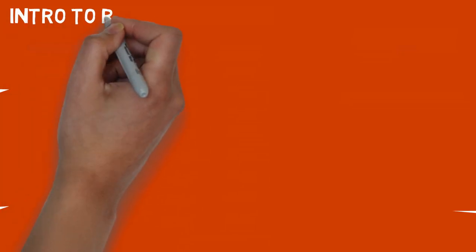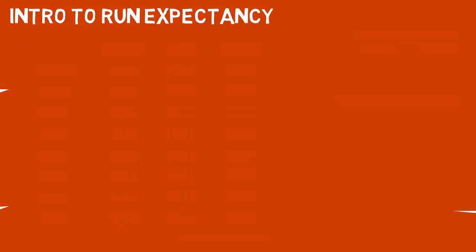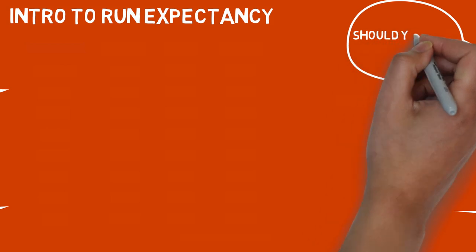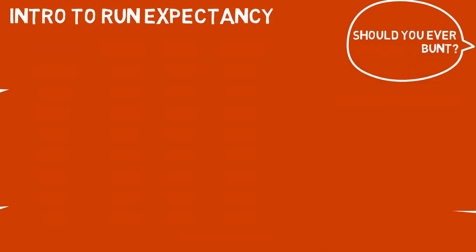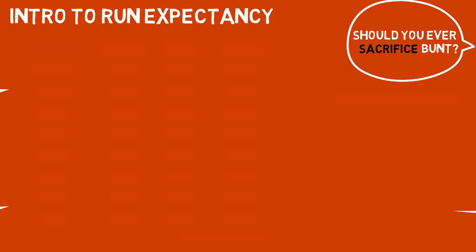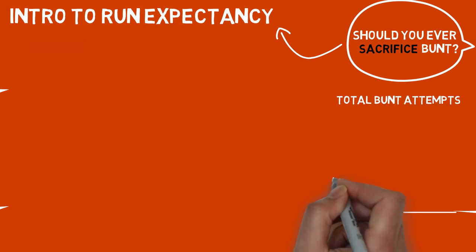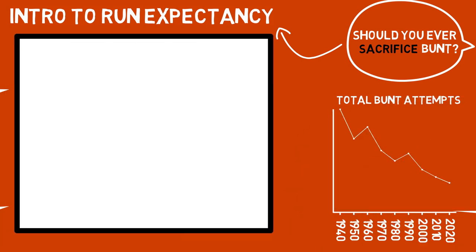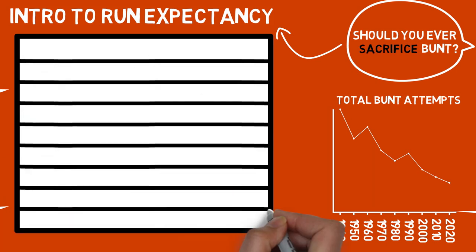In order to understand why you should bunt or not, we need to start by getting you introduced to the run expectancy matrix. To clarify, for our current examples, we will only be referring to the sacrifice bunt, in which a player gives themselves up in order to move one or more runners up one base. The use of the bunt in general has been steadily declining for almost 50 years — but why? Enter our run expectancy matrix.